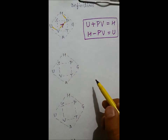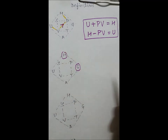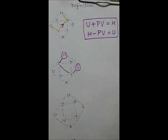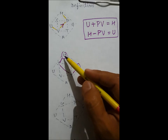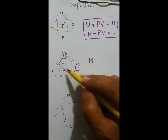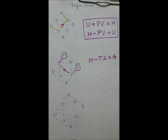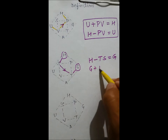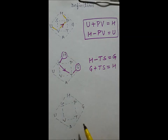Now let us derive the relation between G and H. Going from G to H diagonally, the arrow goes up giving a positive sign. Going from H to G the arrow goes down, giving a negative sign. So H minus TS equals G, or equivalently G plus TS equals H.